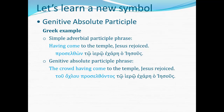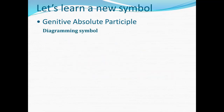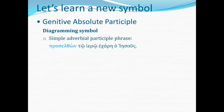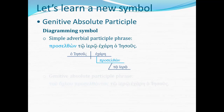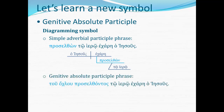So how will we diagram the genitive absolute? What will the symbol look like? First, let's talk about the simple adverbial participle — it goes on just a simple right angle modifier shelf. Now for the genitive absolute phrase, how could we modify that adverbial participle diagramming symbol to accommodate the whole genitive absolute construction? We'll need that right angle modifier shelf because the genitive absolute is an adverbial participle. To work the subject into the symbol, we'll lengthen that horizontal line and introduce a subject-verb divider — a vertical line extending below that horizontal line. We'll write the subject tou ochlou on the left side of that divider, the participle proselthontos on the right side, pretty much like it was a regular baseline.